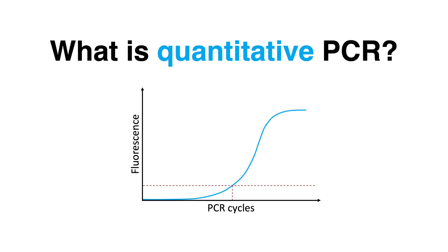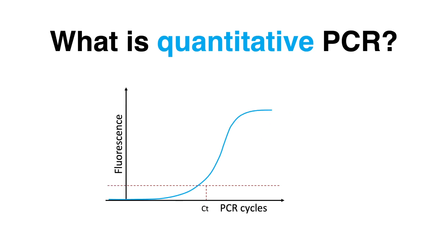A defined signal intensity has to be exceeded until the product is abundant enough so that the fluorescence is detectable over background. The cycle number at which enough amplified product has been accumulated to exceed that threshold is referred to as the CT value.